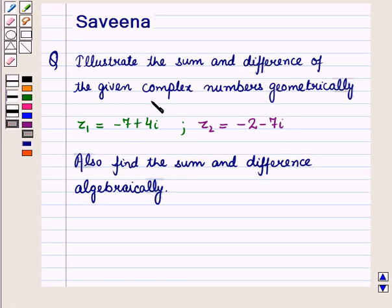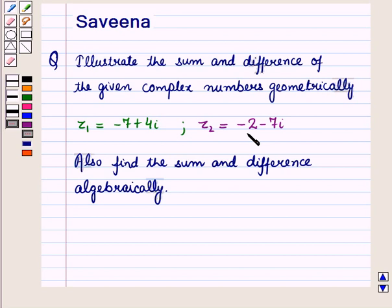Hello and welcome to the session. In this session we will discuss a question which says: illustrate the sum and difference of the given complex numbers geometrically. The complex numbers are given as z1 is equal to minus 7 plus 4 iota, z2 is equal to minus 2 minus 7 iota. Also find the sum and difference algebraically.